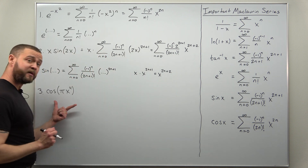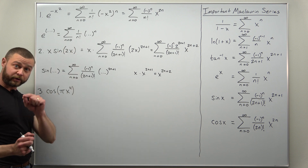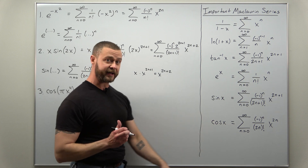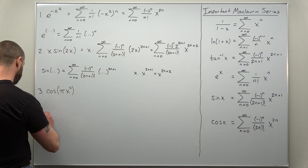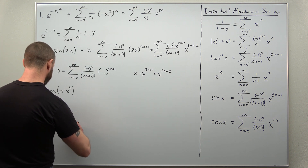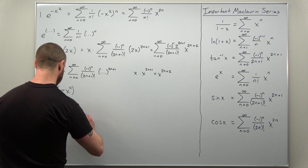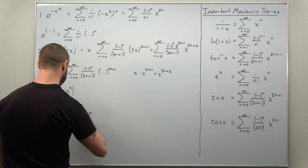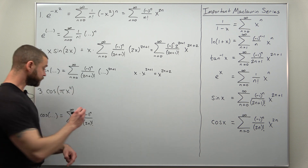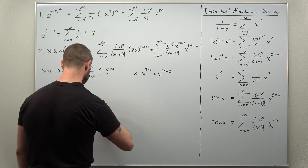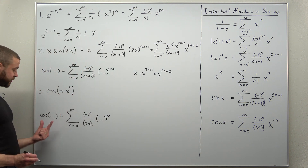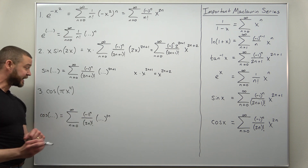For our last example we're going to start with the Maclaurin series for cosine of x and make a replacement. Let me rewrite this as cosine of something: that's the sum from n equals 0 to infinity of negative 1 to the nth power divided by 2n factorial, with something raised to the 2n power. We just need to make a replacement — replace the inside with pi times x to the fourth.